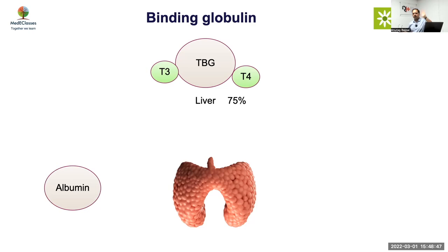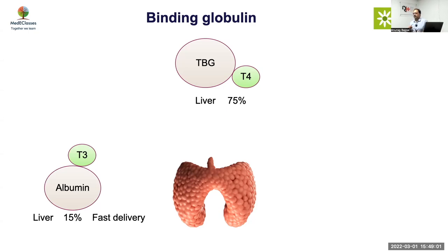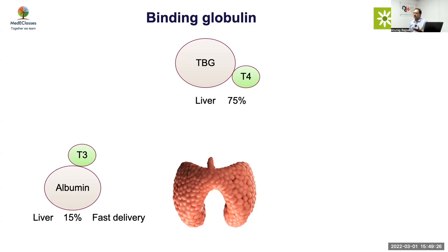Albumin is a big molecule - a huge amount of thyroid can be bound to it, but it will release it quickly because its affinity is less. It is mainly binding T3, present in the liver, accounting for 15% of binding but with low affinity. Low affinity means it is very good for delivering. Think of TBG as a miser who keeps all the money to himself, while albumin is generous - it keeps giving. Albumin releases thyroid to different cells, but for strong holding you rely on TBG.